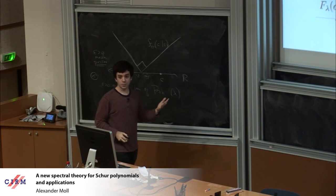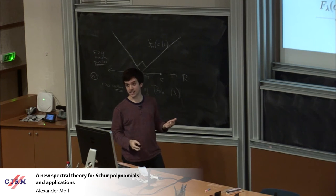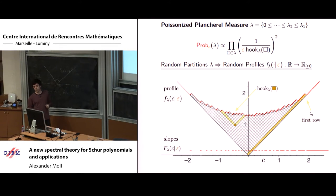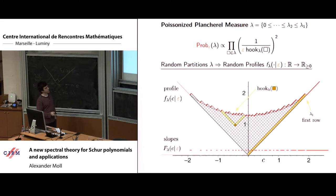If I have a random partition defined in microscopic variables — these hook lengths — then by drawing the picture I get a random macroscopic object: these profiles. So now I have a model for random profiles. We'd like to know the behavior as epsilon goes to zero. As epsilon goes to zero in this formula, the typical partition you'll see has more and more boxes. Let's state two theorems that are well known for this model as epsilon goes to zero.